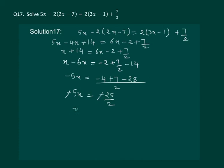That means x is equal to 25 by 2 into 5. Since we are dividing both sides by 5. This will give us x equal to 5 by 2, which is the required answer.